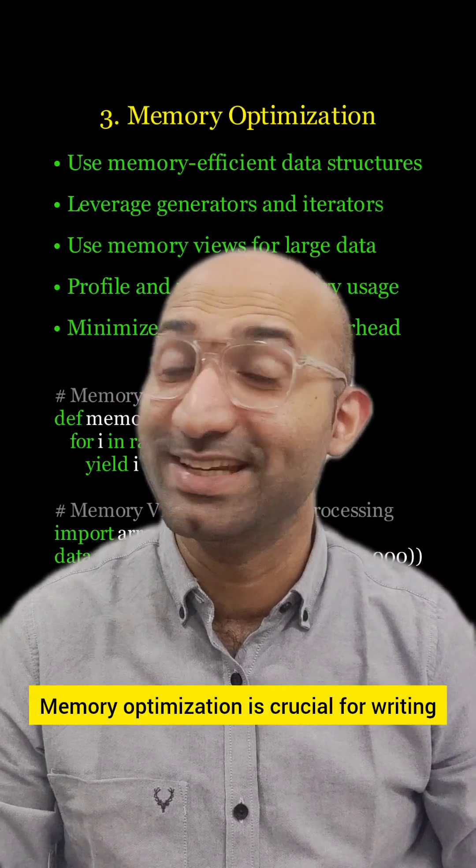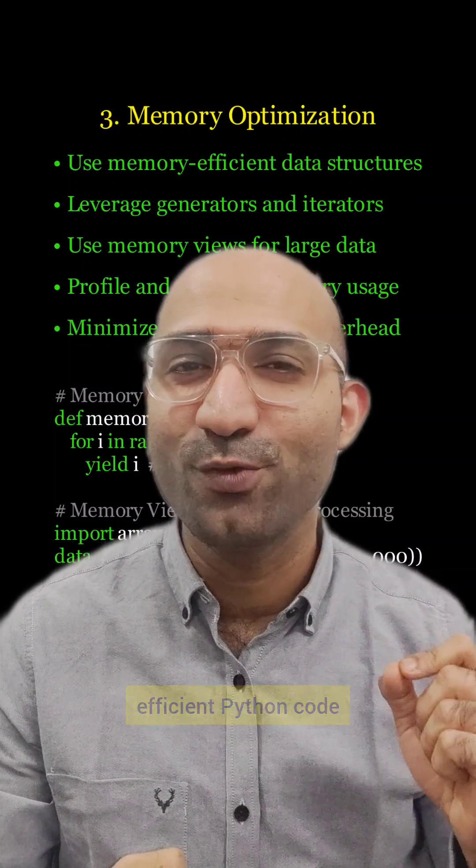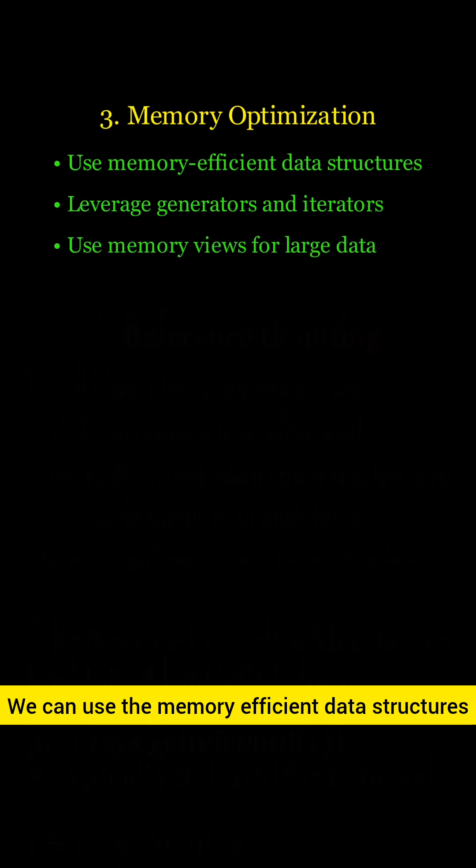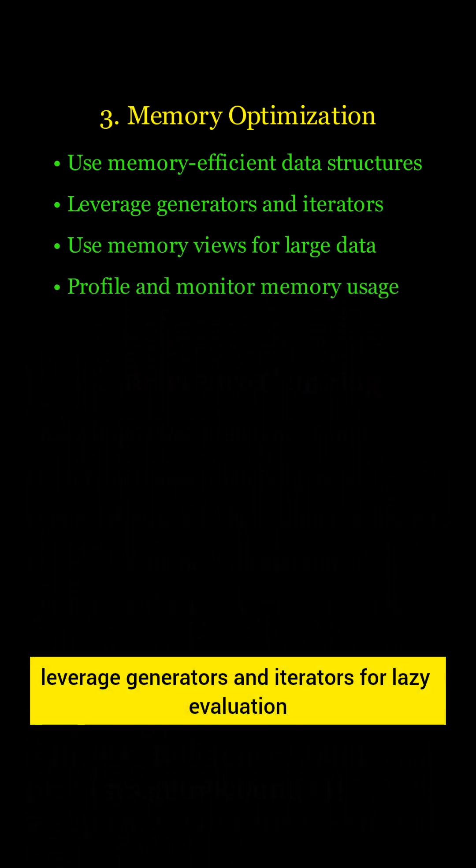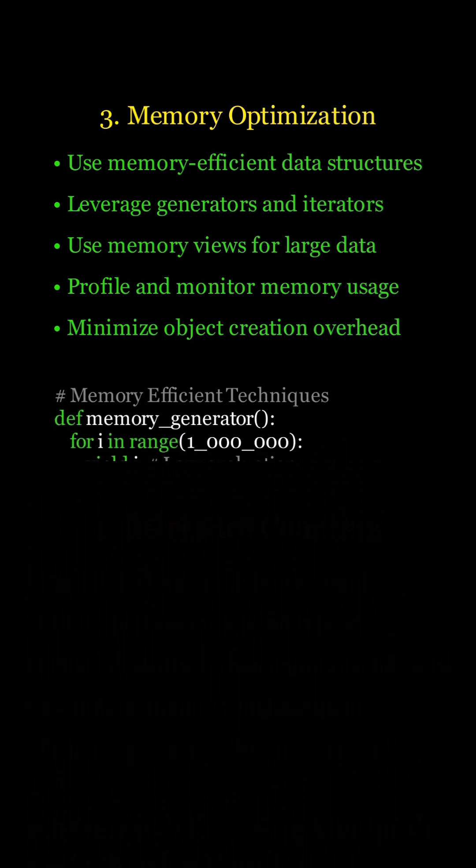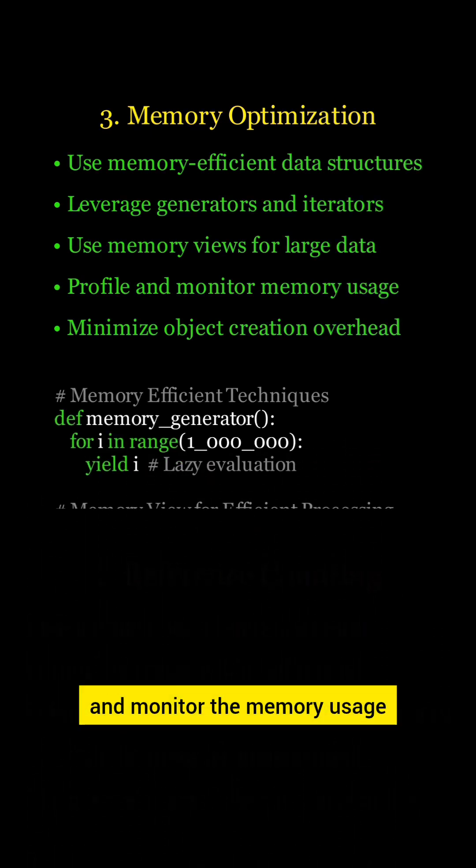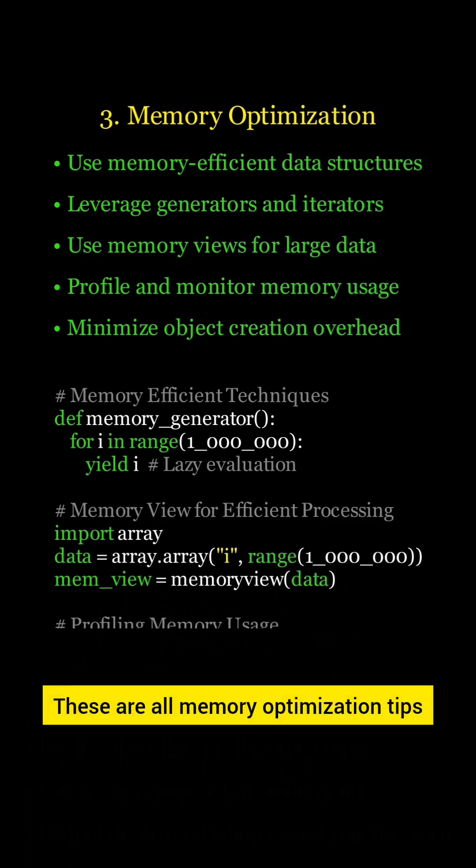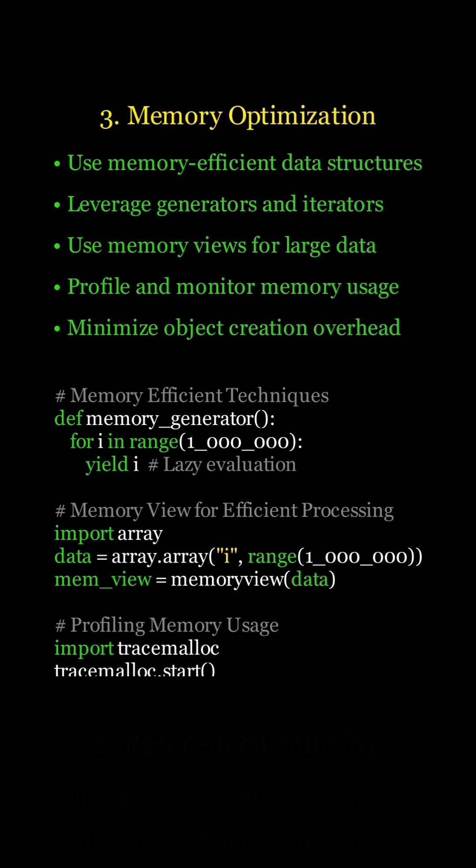Memory optimization is crucial for writing efficient Python code. First, we can use memory efficient data structures. Leverage generators and iterators for lazy evaluation. Utilize memory views for processing large data sets. Regularly profile and monitor memory usage. And minimize unnecessary object creation. These are all memory optimization tips.